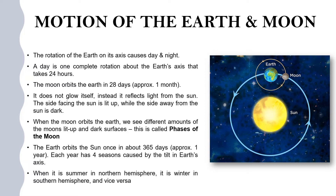The Moon orbits the Earth in 28 days, which is almost a month. We know that the Moon does not glow itself but it reflects the light from the Sun. So only the half which is facing the Sun is lit up and that's what we see, leaving the other side in the shadow.